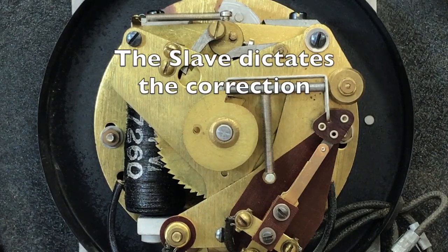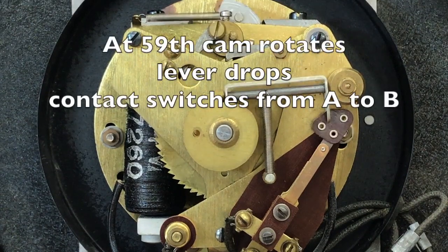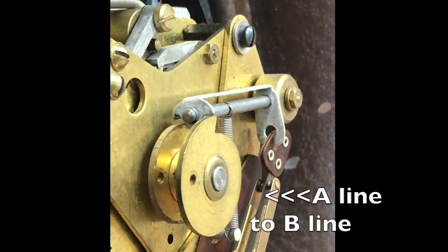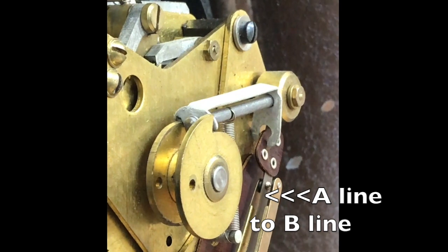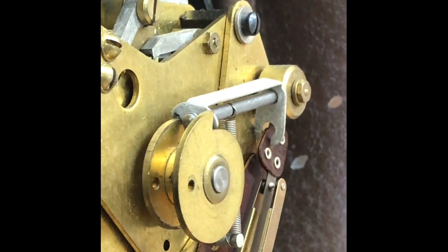It is the slave that dictates the correction. At the 59th minute, the cam rotates, the lever drops, and the contact changes from A to B. You can see this happening from the side. Everything happens at 59.